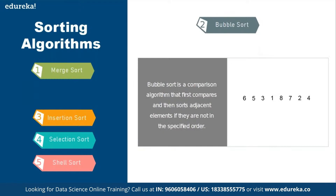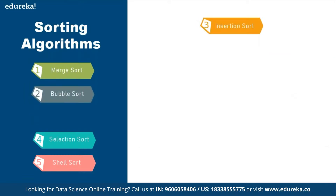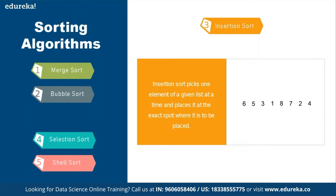Bubble sort does a comparison of each adjacent element and swaps them if they are not in the specified order. Insertion sort, as the name says, tries to place each element into its correct position as elements are being inserted into the list, so the list comes in proper order as it is built.